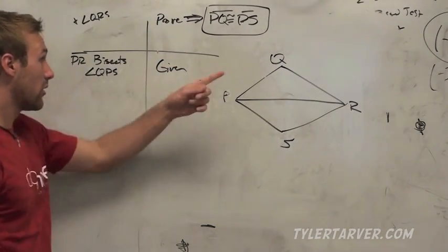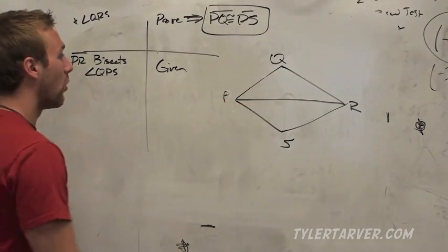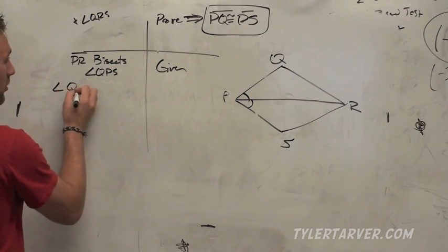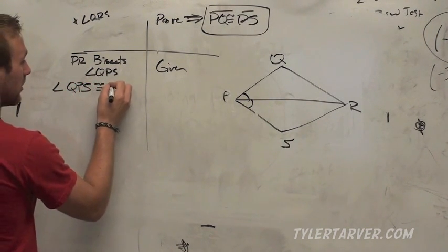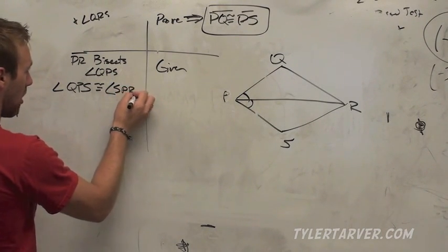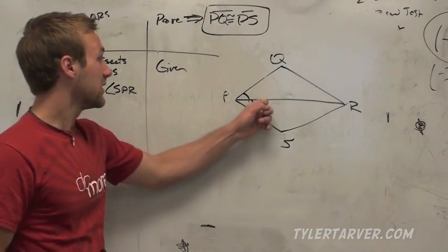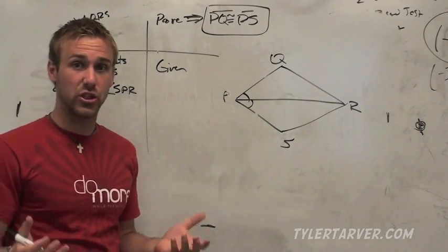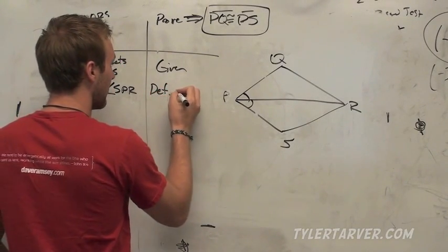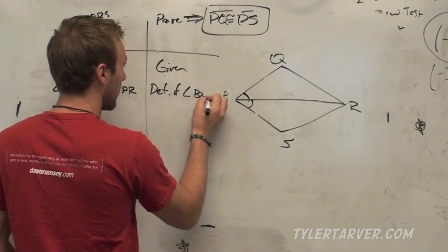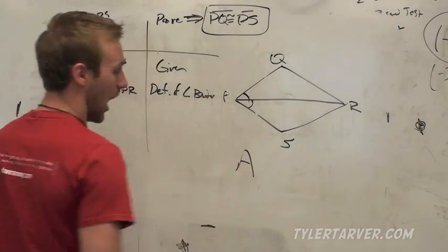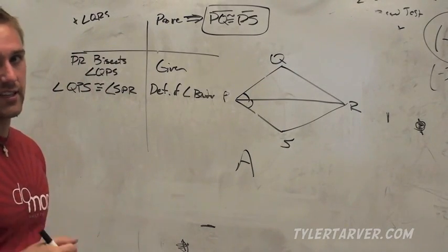So that's the given. P, R bisects Q, P, S. Now if that bisects it, what do we know? We know, obviously, that that angle is congruent to that angle. Angle QPR is congruent to angle SPR. You know how I know that? Because that's an angle bisector, and that's what angle bisectors do. They cut angles in half. So I'm just going to write the definition of an angle bisector. Now I've got my angle proof. So right now we're sitting here and we've got an A. I know I'm probably not going to prove this was side, side, side.